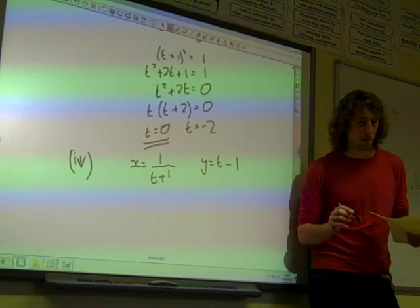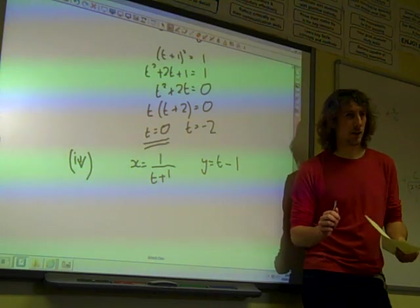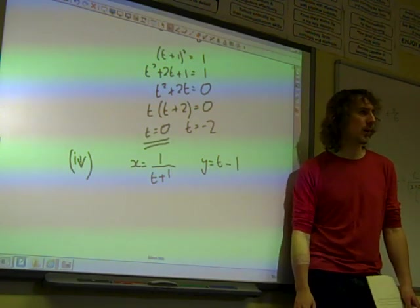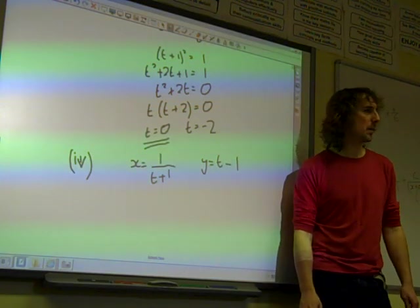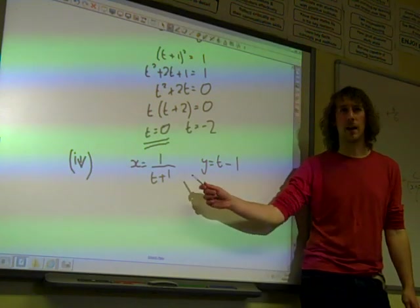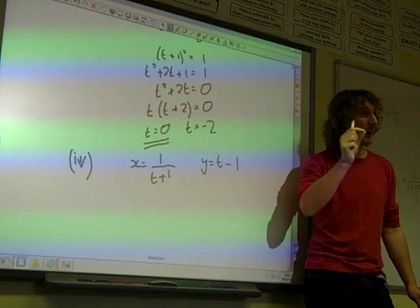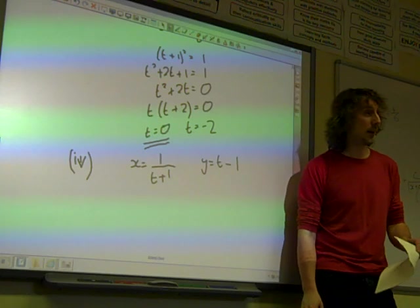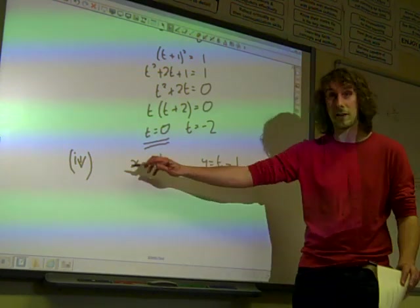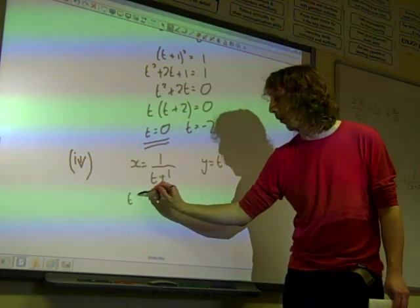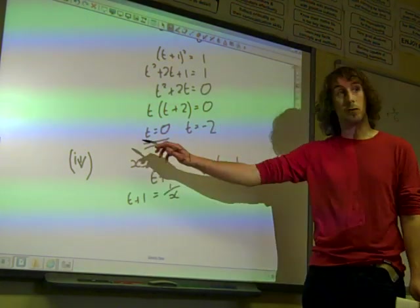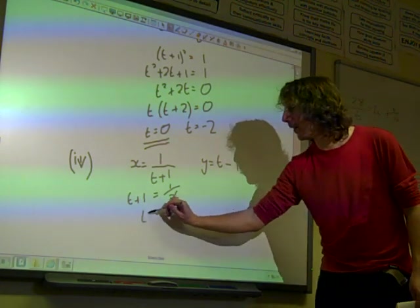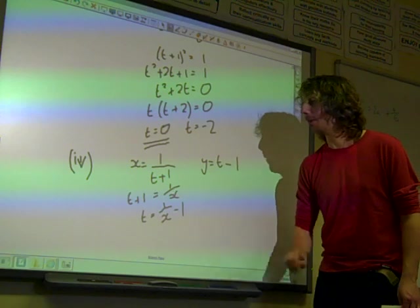At first glance, it looks to me like it's easiest to say this one says that t equals y plus 1, and then rearrange that. And that's probably quite an easy way to do it. The question did say give your final answer in the form y equals the function of x. So I'm just wondering, actually, if it might be slightly easier if I rearrange this bit and say that t plus 1 is 1 over x. Because that's true if we multiply by t plus 1 and divide by x. So t is 1 over x minus 1.